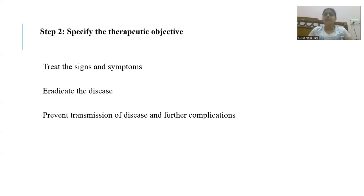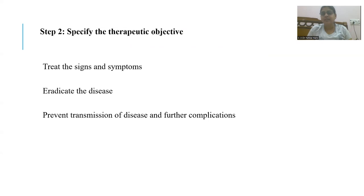The therapeutic objectives are to treat the signs and symptoms — diarrhea, abdominal pain, and fever — to eradicate the disease, and to prevent transmission. In the body, trophozoites are present in the intestinal lumen. When they attack the intestinal mucosa, trophozoites can lead to ulcers, which results in blood and mucus in the stools — amoebic dysentery.